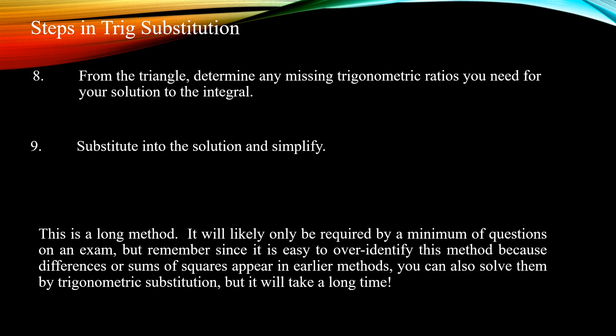This is the final caveat: this is a long method — the longest in the course — so it will likely only be required by a small number of exam questions. The danger is that because it can be applied to every problem containing a difference or sum of squares, a question that might take three to five minutes by an easier method could take twenty minutes with trigonometric substitution. Make sure you have not misidentified a question that can be solved by a simpler method; only use trigonometric substitution when you have to.